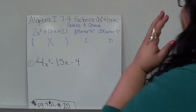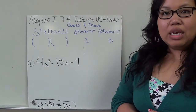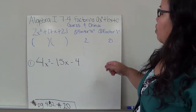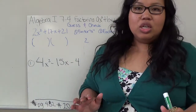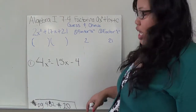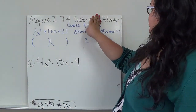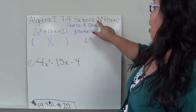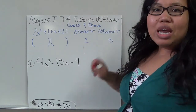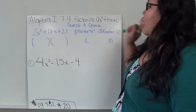In Algebra 1, Section 7-4, we're dealing with factoring ax² plus bx plus c. The difference between this and the last section is you can't use the last section's strategy, because that section deals with x² plus bx plus c — a quadratic without a leading coefficient other than 1. If there's just a 1 in front, then I can use the last section's method.